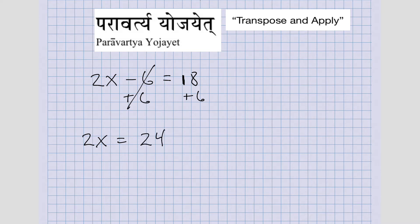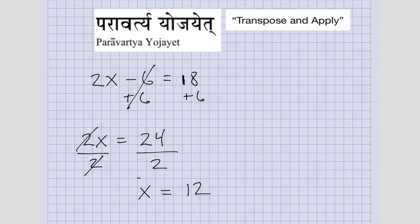The next step would be to divide both sides by two. That cancels out here on the left, and what we're left with is X equals 24 divided by two, which gives us 12. So here's our answer: X equals 12.